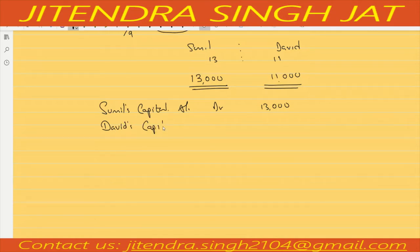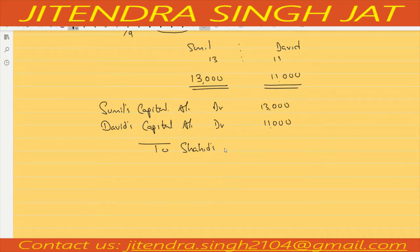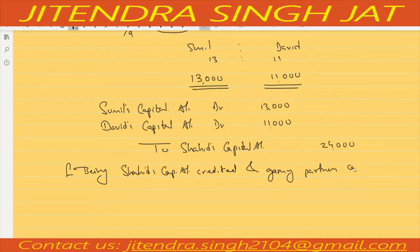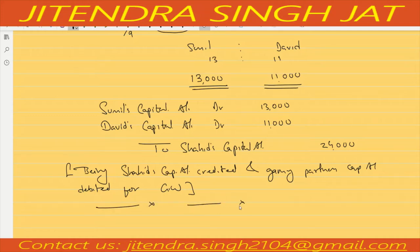David's capital account is also debited by 11,000, because these two partners are gaining — that's why their capital accounts are debited. It will be credited to retiring partner Shahid's capital account, credited by 24,000. Being Shahid's capital account credited and gaining partners' capital accounts debited for goodwill.